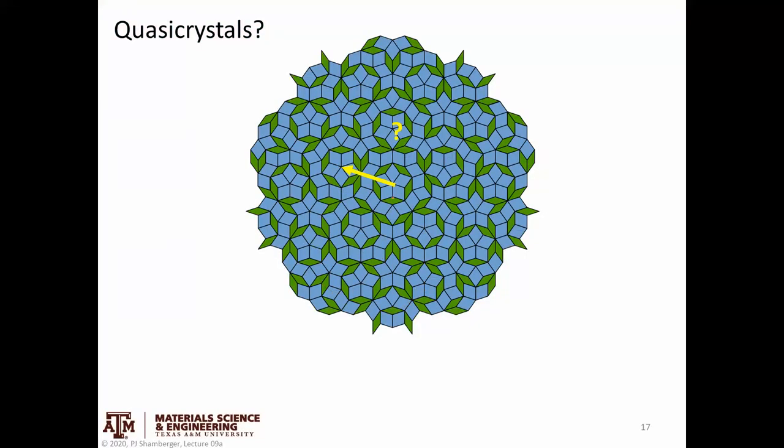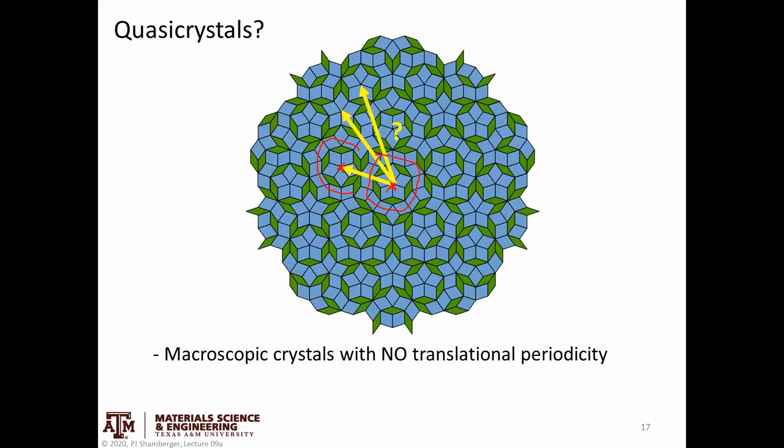And the first clue that something weird is going on is if you try and identify a lattice vector or a unit cell in this pattern. So let's say the center of this five-fold star is a lattice point. Maybe I could try and go out to the center of this star, but it's not quite the same, because this first star is ringed entirely with these blue tiles. And this one, that ring only goes part of the way around. So this is not going to be the same chemical surroundings as our original point. And you can try and find every single other little five-fold star, but none of them look quite like this star in the middle.